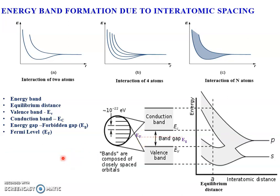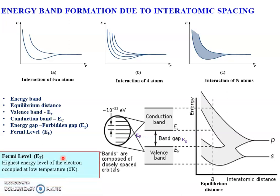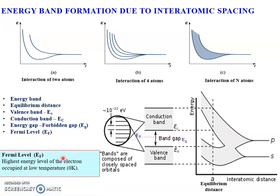The next important parameter is the Fermi level. The highest energy level occupied by an electron at low temperature is indicated as the Fermi energy level. In another way, the energy level at which the maximum probability of finding an electron is defined as the Fermi energy level.